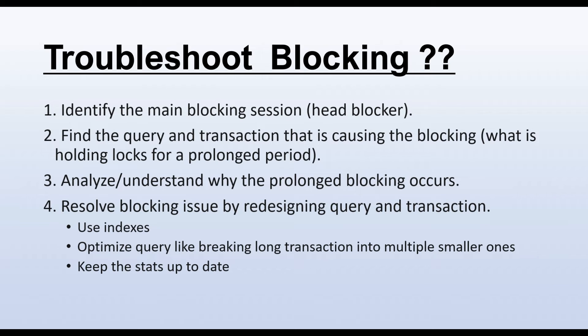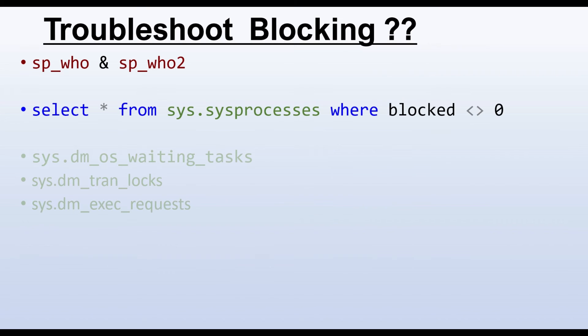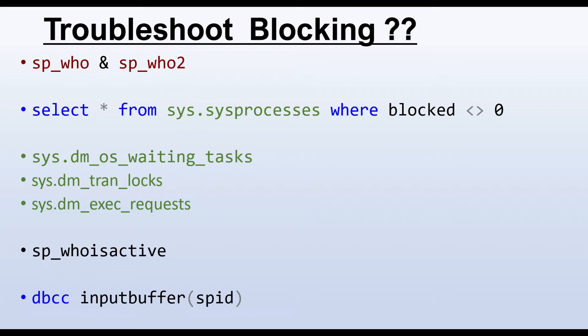Next we will see the troubleshooting part. These are the four steps Microsoft recommends: first, identify the main blocking session; second, find the query and transaction causing the blocking; third, understand and analyze why the blocking occurs for a prolonged period; and fourth, resolve the blocking issue by redesigning the query and transaction — for example, breaking long transactions into multiple smaller ones and keeping statistics up to date. For troubleshooting, we have gone through stored procedures, DMVs, and GUI methods like extended events, activity monitor, and standard reports. Now I am going to show you sp_whoisactive, which gives much more useful information that will be very helpful in resolving blocking.